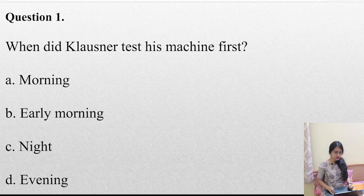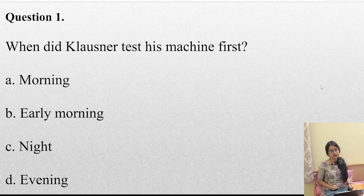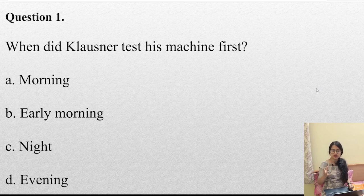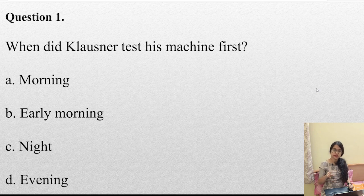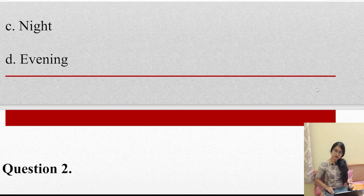When did Klossner test his machine first? Is it morning, early morning, night, or evening? As we all know, it is obviously evening, because just after evening the late evening came, it was dark everywhere and he moved inside. Next morning he was there to test his instrument again. So the first answer is: evening.